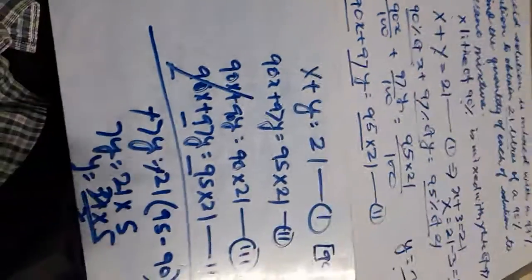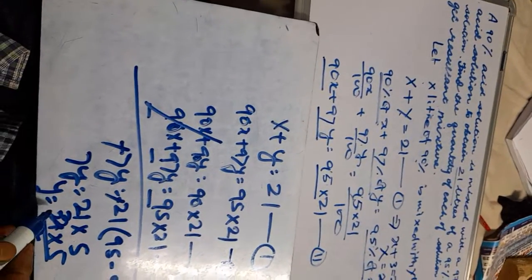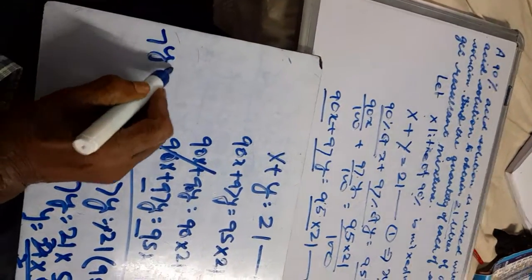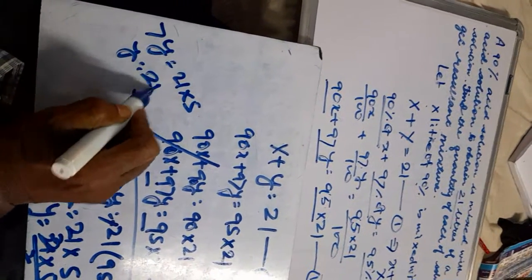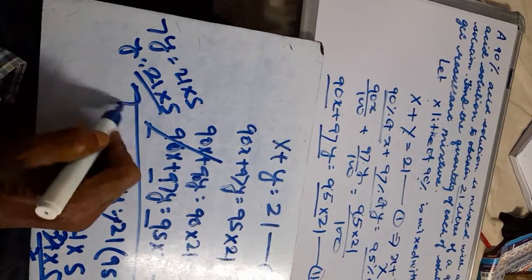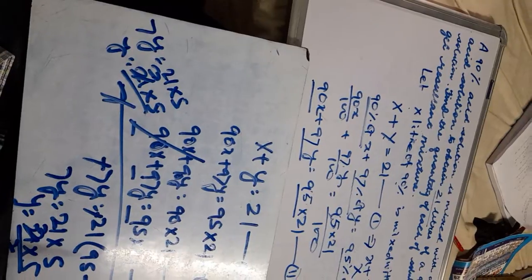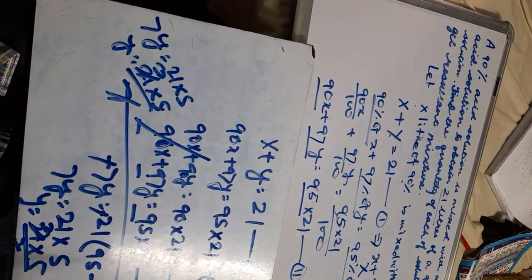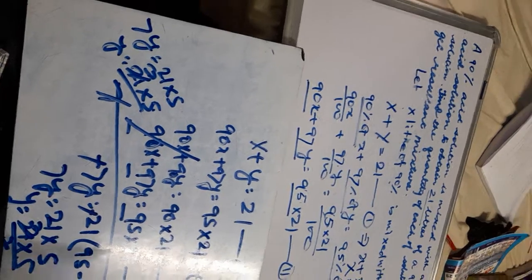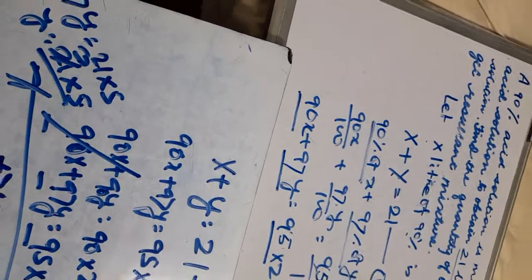Recapping: 7y equals 21 times 5, so y equals 21 times 5 divided by 7. Seven threes are 21 and three fives are 15, so y equals 15.